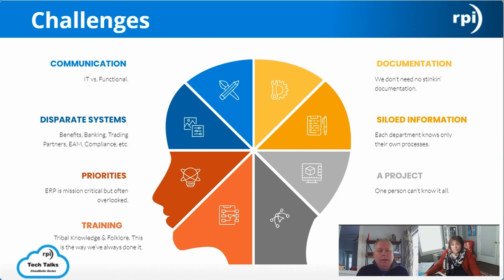The second challenge is training. In most organizations there's tribal knowledge or folklore — a person was trained to do a job by a person who was trained by another person, with no real formal training. There's sometimes a lack of understanding of what happens in the process before or after, or really why you're doing the thing you're doing. That has a big impact on trying to gather information when it comes to WRICE materials.